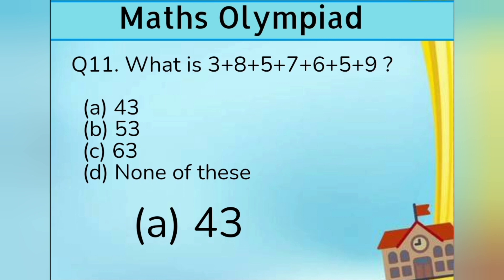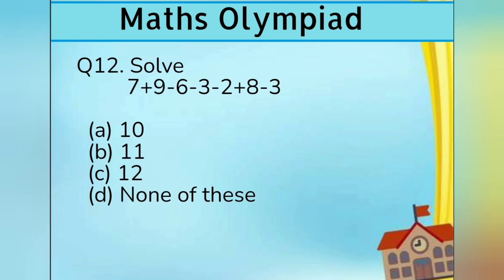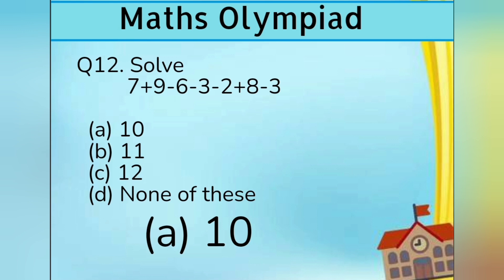Question number 12. Solve 7 plus 9 minus 6 minus 3 minus 2 plus 8 minus 3. Option A 10, Option B 11, Option C 12, and Option D none of these. Answer is Option A 10.